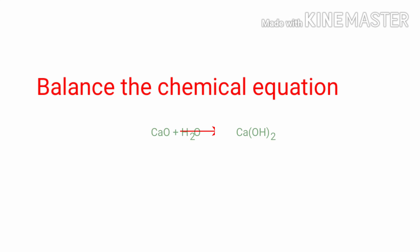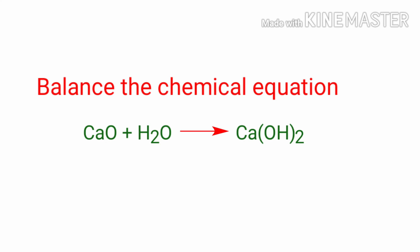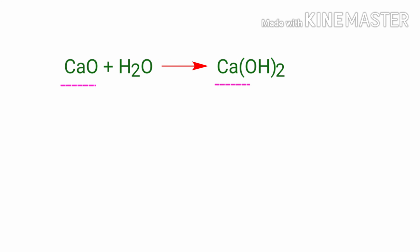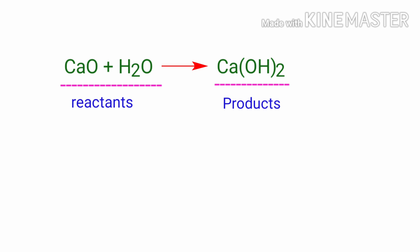Balance the Chemical Equation. Oxocalcium plus water gives us calcium hydroxide. In this equation, the reactants are oxocalcium and water, and the product is calcium hydroxide.